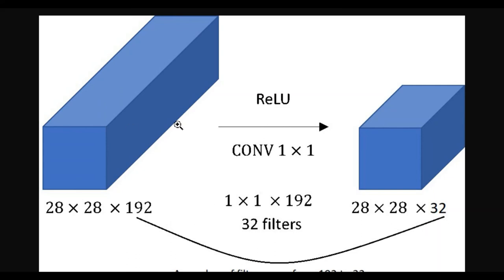We don't want all 192 channels because that's too many for efficient computation — your neural network would take hours to train. Instead, we apply a 1×1 filter with 192 channels to match the input depth, and the output becomes 28×28×32. The 32 represents the reduced number of feature maps from the original 192. This does not mean we are losing information — we are selecting only the most important and valuable features from all 192. That is how 1×1 convolution achieves dimensionality reduction. That's it for this video — thank you for watching!